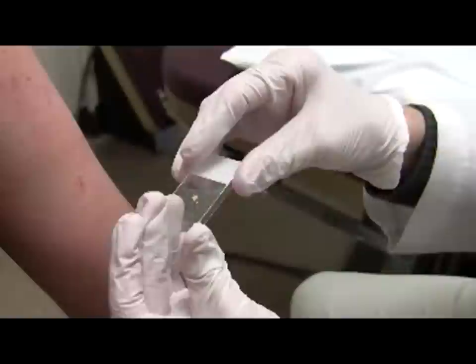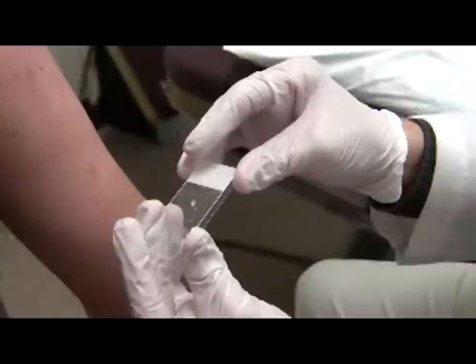If taking a specimen from an oncomycotic nail, use a curette to scrape subungal nail debris onto a slide. Use KOH 20% for nail preparations.